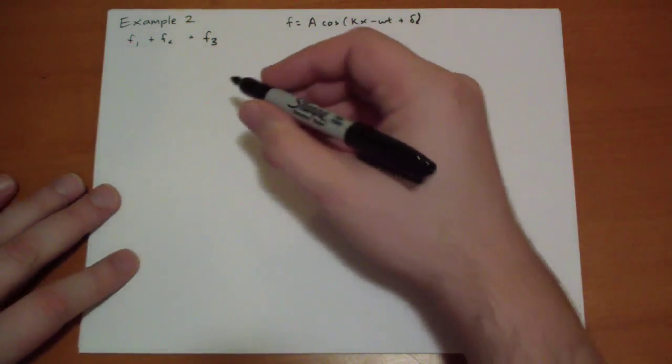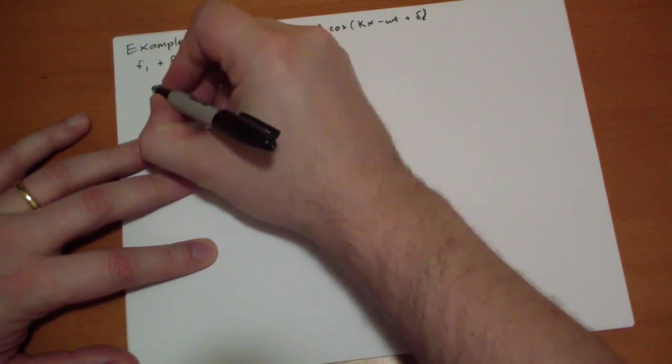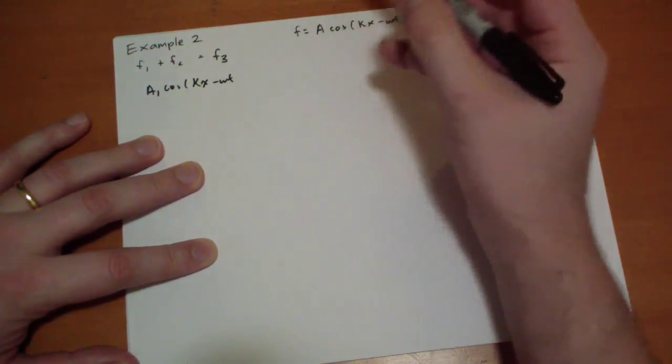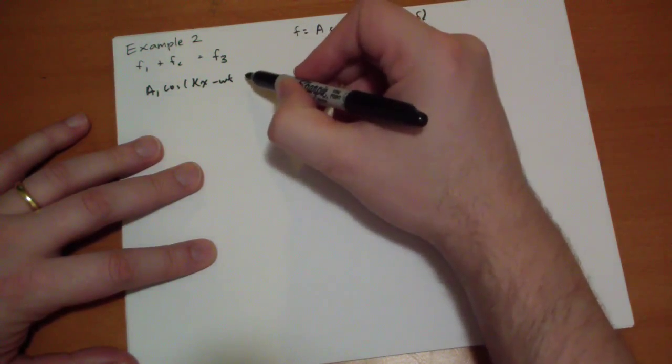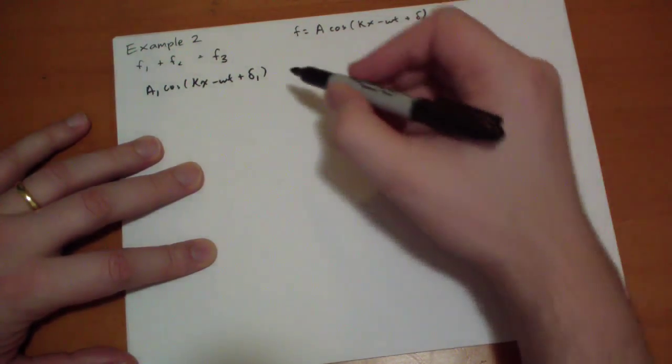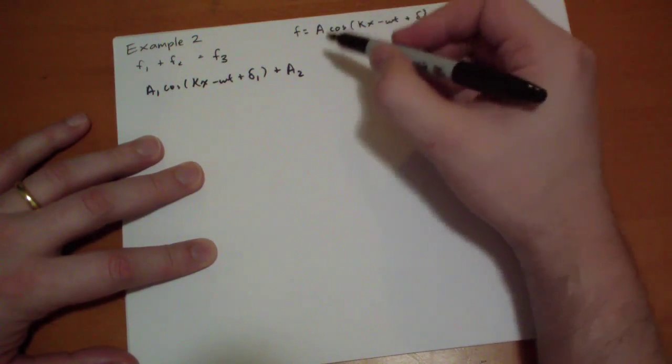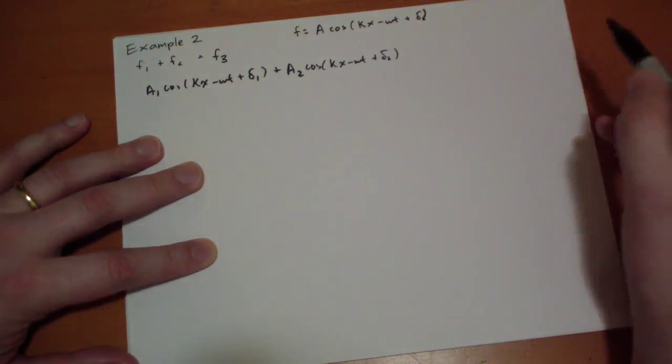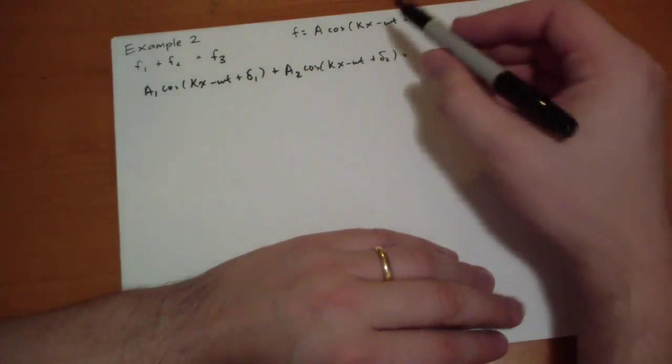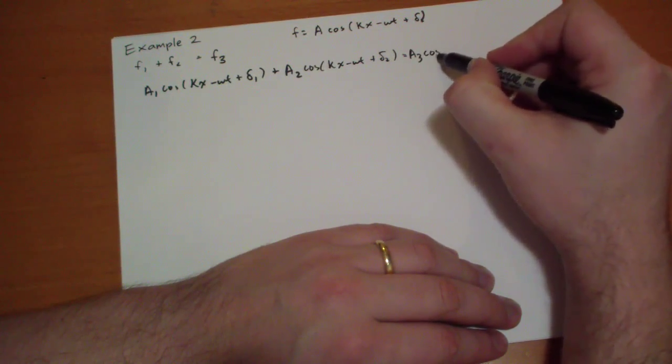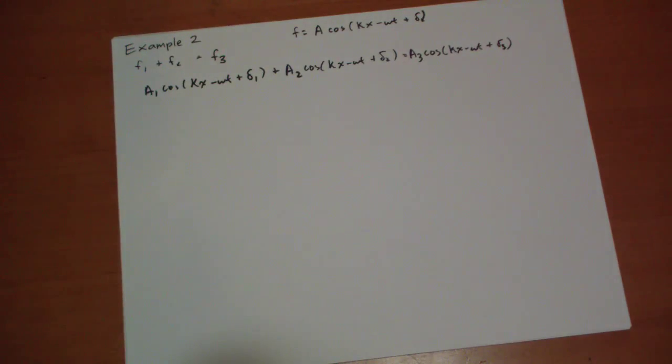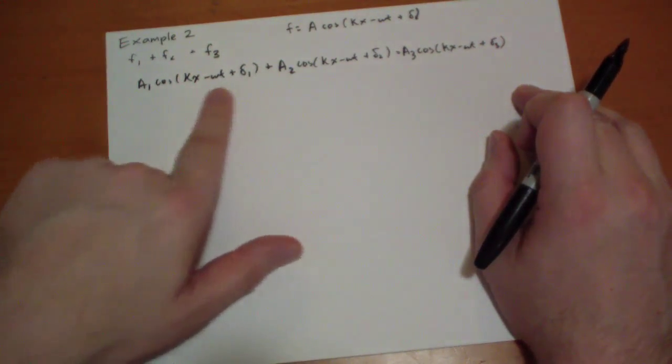If we add the two together we get A1 cosine of KX minus omega T plus delta 1, because they're the same wave number they're going to have the same frequency. And then F2 is A2 cosine of KX minus omega T plus delta 2. And by assumption we're going to assume we're going to get a wave back that has the same wave number, a different phase constant and a different amplitude.